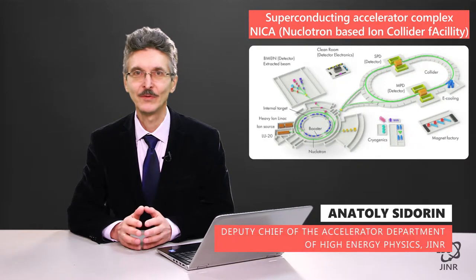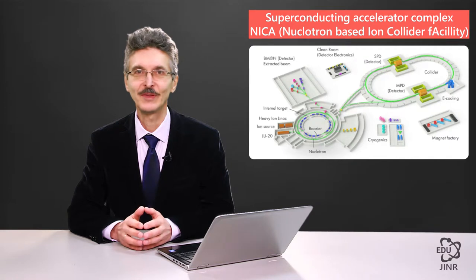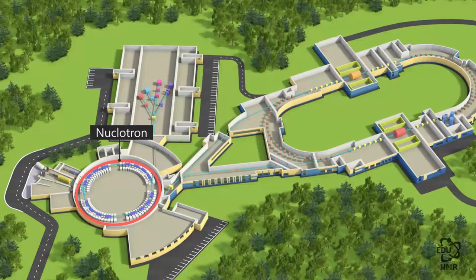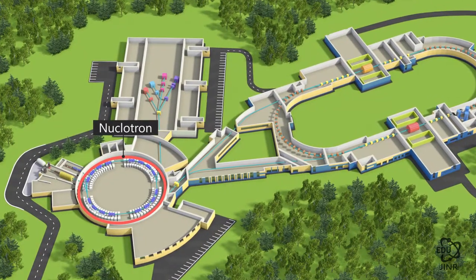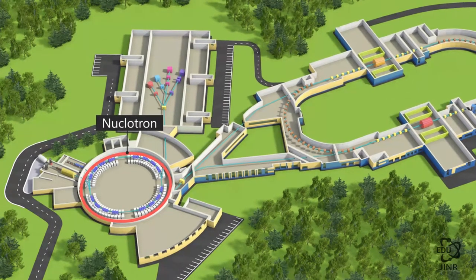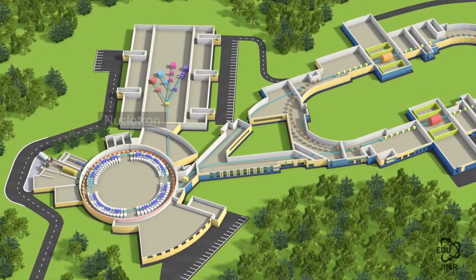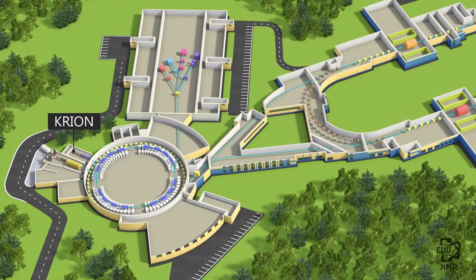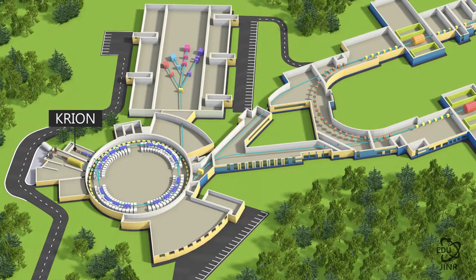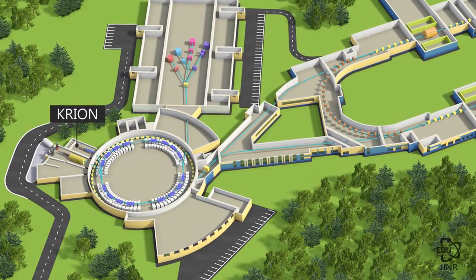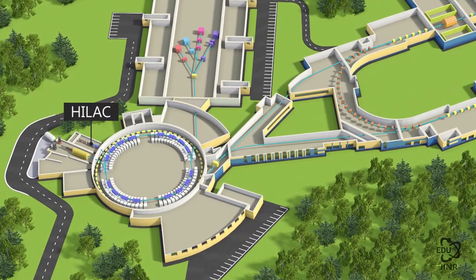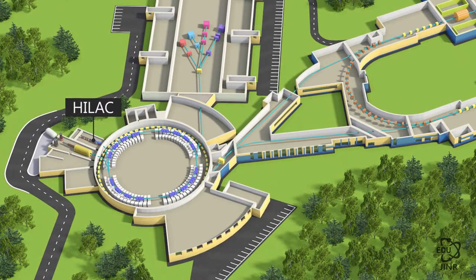The main accelerator of the NICA complex, which one can say is the heart of the facility, is the superconducting accelerator Nucleotron, which provides beams of the required quality and level of energy for experiments. It is equipped with two injection chains. The heavy ion injection chain includes sources of heavy ions of an electron string type known as Kryon. Heavy ions from the source are injected into the linear accelerator, the so-called heavy ion linear accelerator, or HILAC.